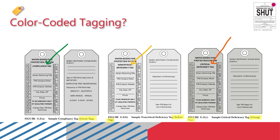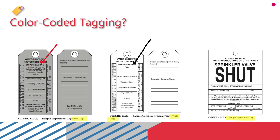You can see sample tags on screen. The green tag is the compliance tag — enter all required information. The yellow tag is the non-critical deficiency tag — you must mention the type of deficiency and related details. The orange tag is the critical deficiency tag. The red tag represents impairment. The white tag is the correction or repair tag. There is also a sample impairment tag shown for a shutoff valve or sprinkler valve.